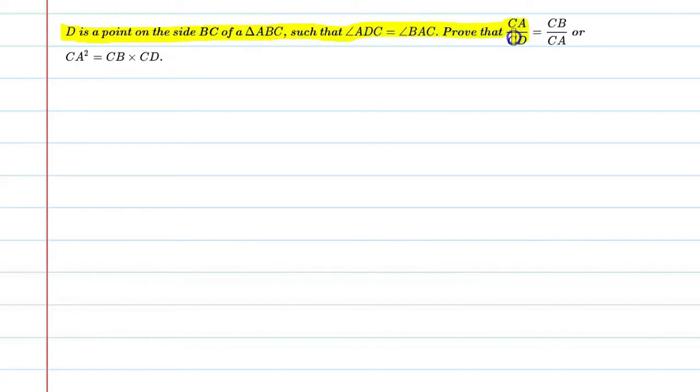Prove that CA upon CD is equal to CB upon CA, or CA square is equal to CB into CD.